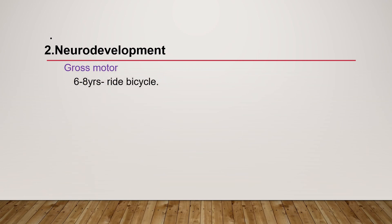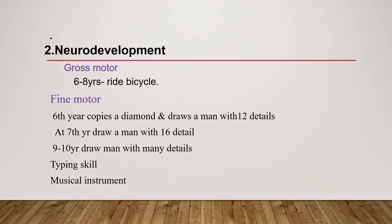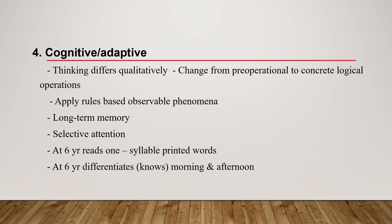Neurodevelopment at school age: gross motor — at six to eight years they ride a bicycle. Fine motor — at six years they copy a diamond shape and draw a man with 12 details; at seven years they draw a man with 16 details; around 10 years with many details. Typing skills improve and musical instruments are introduced. Social and language development: both receptive and expressive language increase; they identify with same-gender parents as role models; further separation from family occurs. Cognitive development: thinking shifts from preoperational to concrete logical operations; they apply rules based on observable phenomena; long-term memory is established; selective attention occurs. At six years they read one-syllable words and differentiate morning from afternoon.